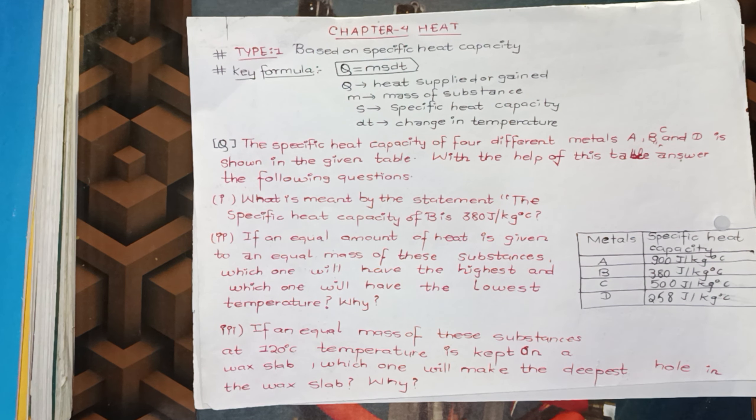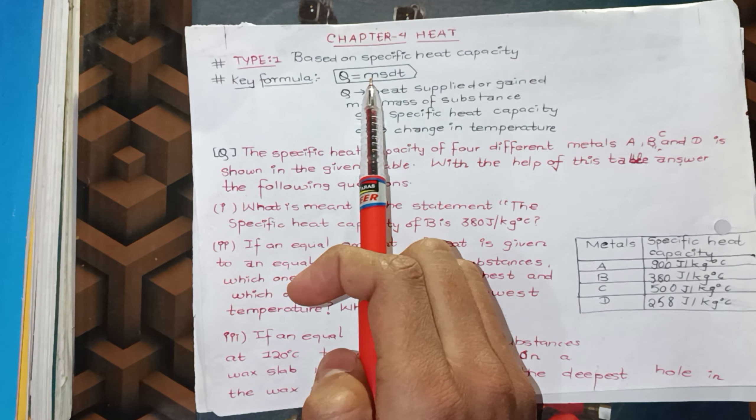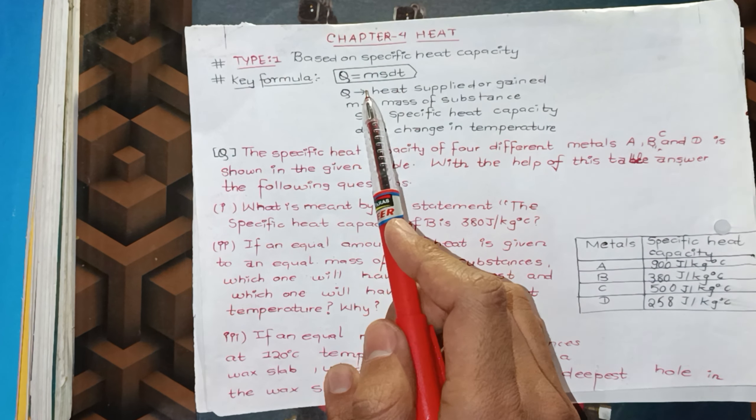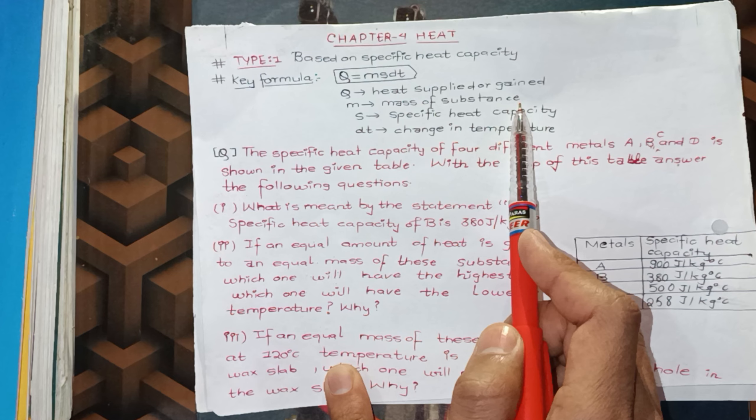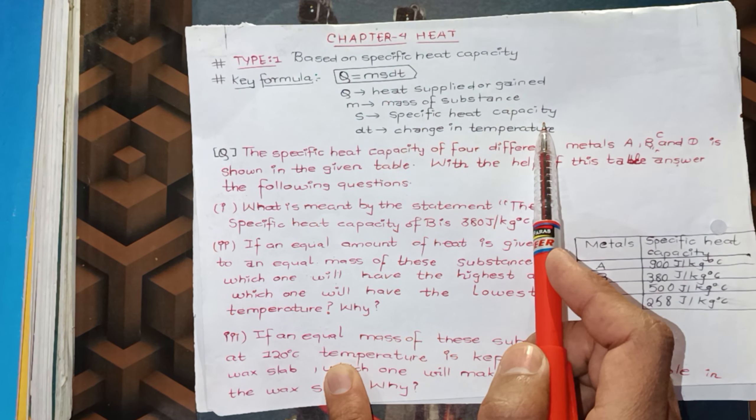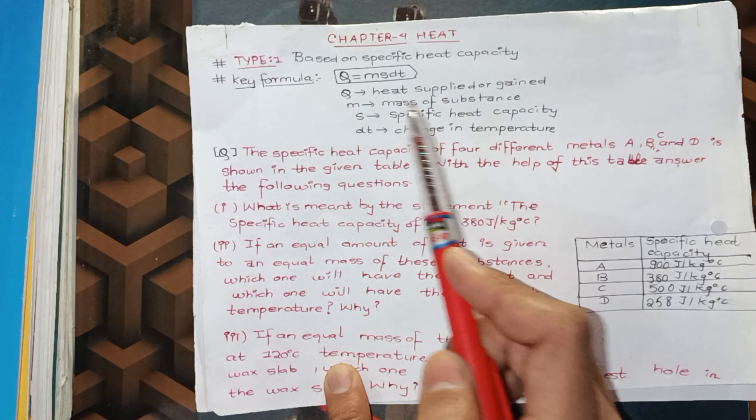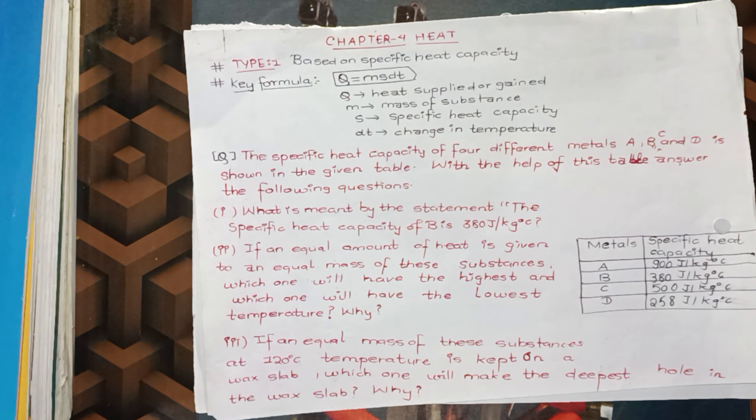In this question, I am going to use this equation: Q is equal to ms dt. This means m is the mass of substance, s is the specific capacity, dt is the change in temperature, and Q is the heat gain supplied.